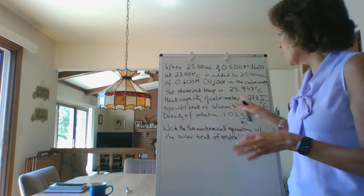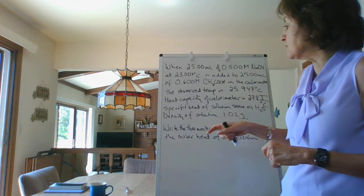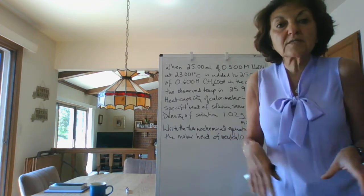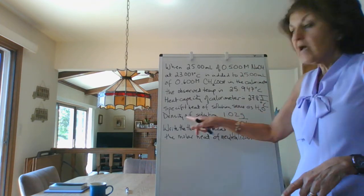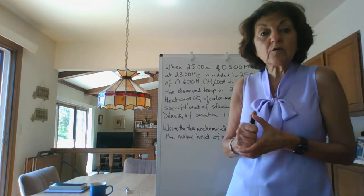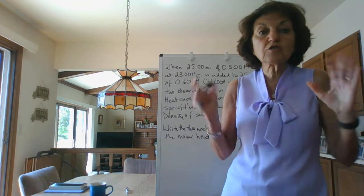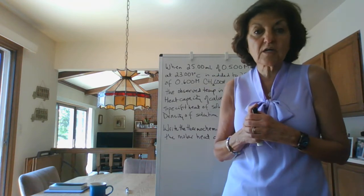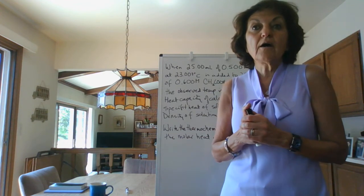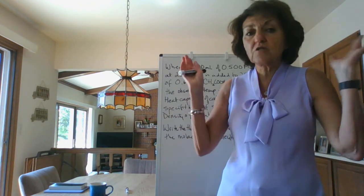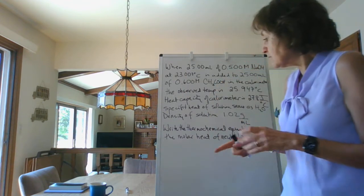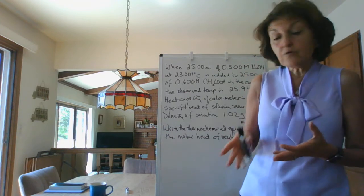They're telling us to assume that the specific heat of the solution is exactly the same as water, and they're giving us the density of the solution as 1.02 grams per mil. If they don't give you the density of the solution, you just assume that the solution is just like water, so for those of you doing the pre-lab questions, just assume it's one gram per mil just like water.